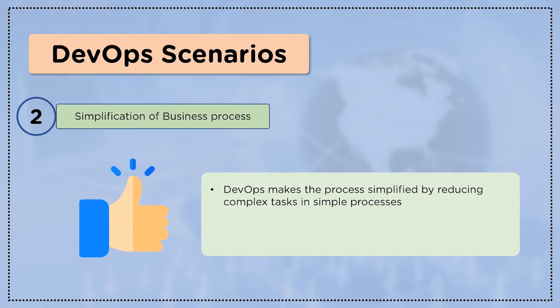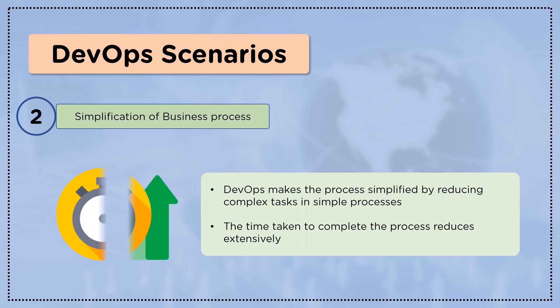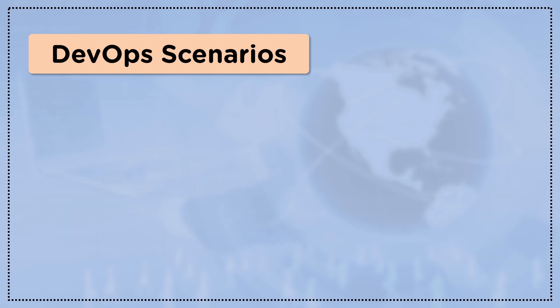The second DevOps scenario is the simplification of business processes. As DevOps brings teams closer and there is better definition to all segments of the project, this makes the process simplified by reducing complex tasks into simpler processes. Therefore, the time taken to complete the process reduces extensively.